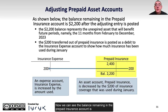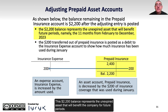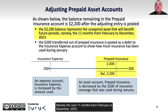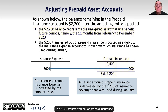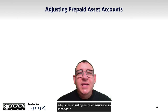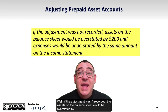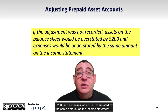After the adjusting entry is posted, the remaining balance in prepaid insurance is $2,200, representing the unexpired asset that will benefit the company for the next 11 months, February through December 2023. The $200 transferred out is posted as a debit to insurance expense, showing how much insurance was used in January. If this adjustment wasn't recorded, assets on the balance sheet would be overstated by $200, and expenses would be understated by the same amount on the income statement.